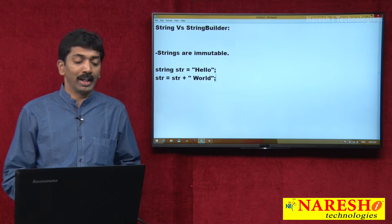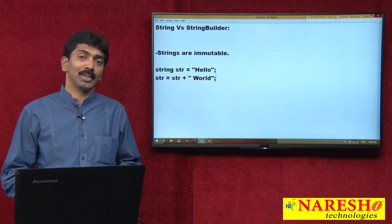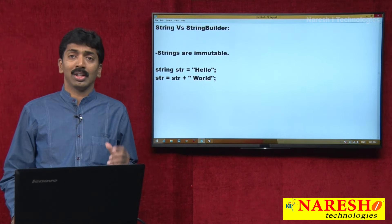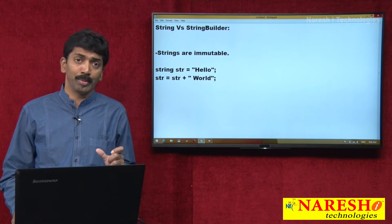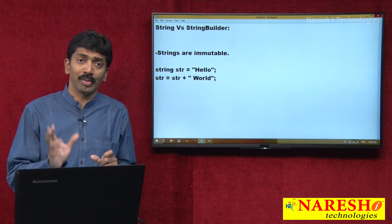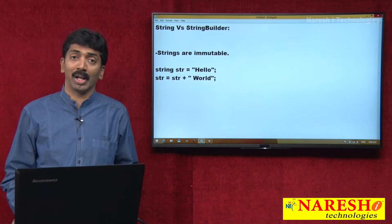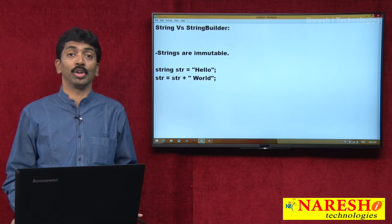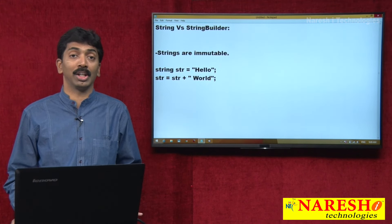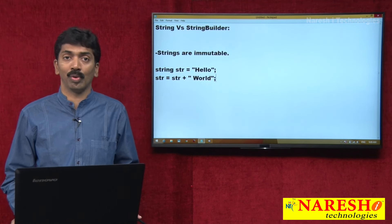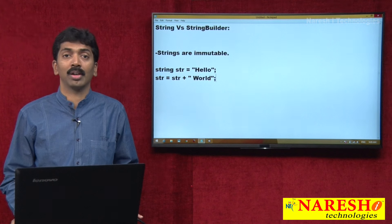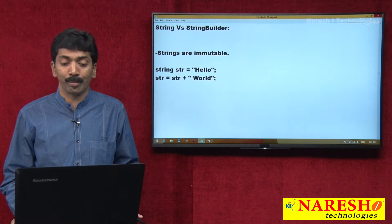When I declare like this, what do people assume? People assume the string is going to be concatenated with a new value, but unfortunately not. It is not going to be concatenated with a new value. Why? Because strings are immutable.